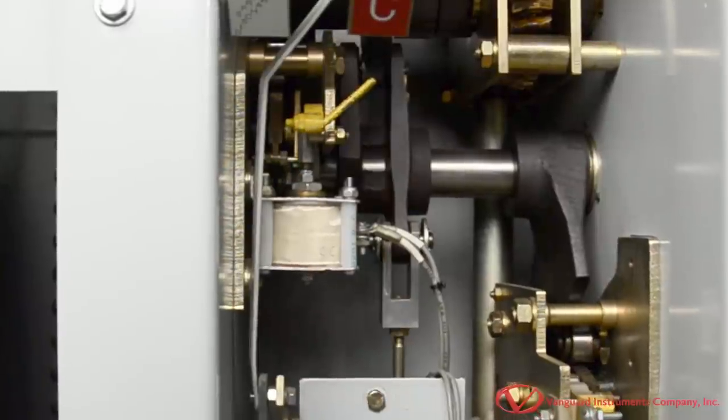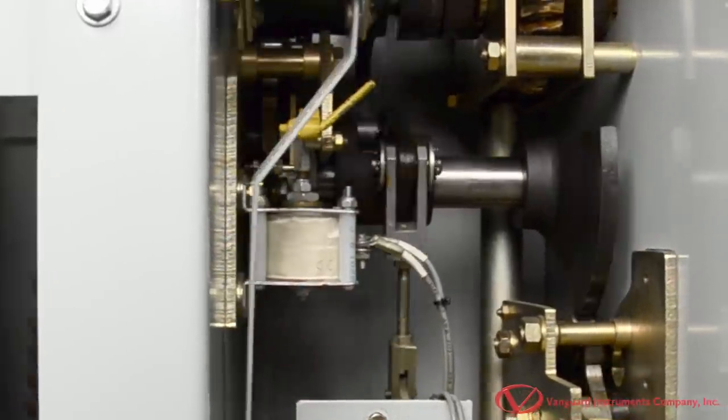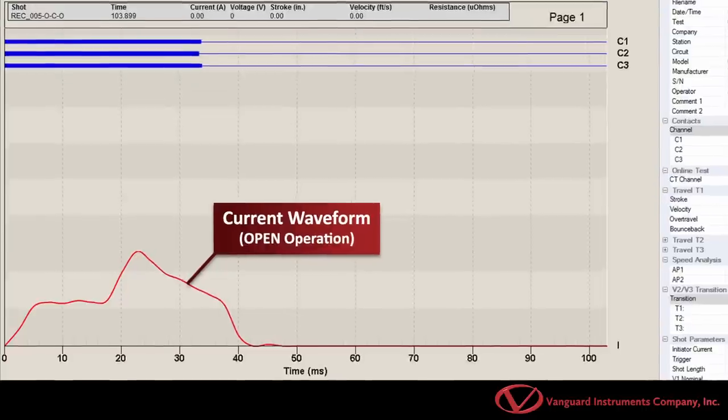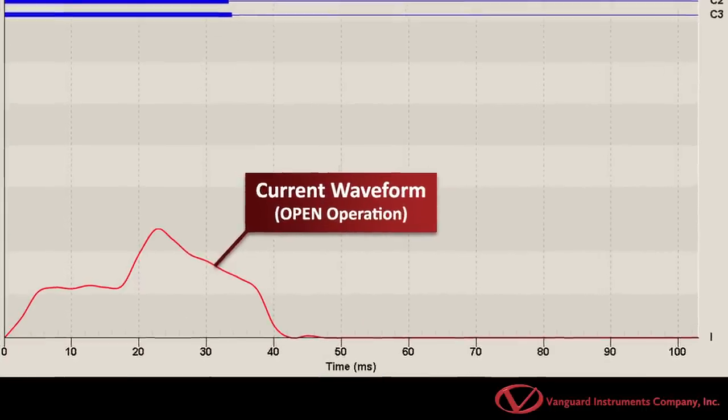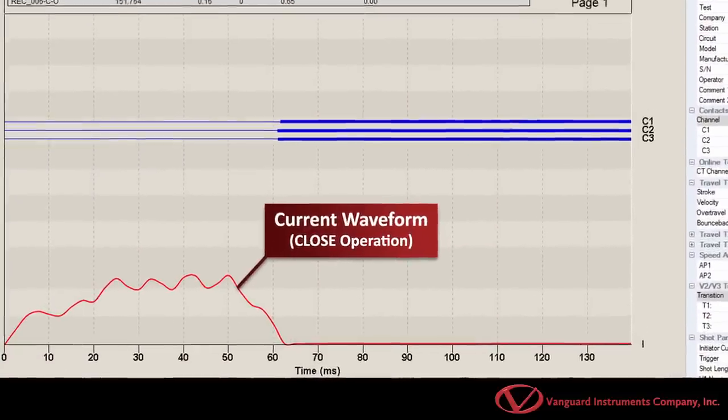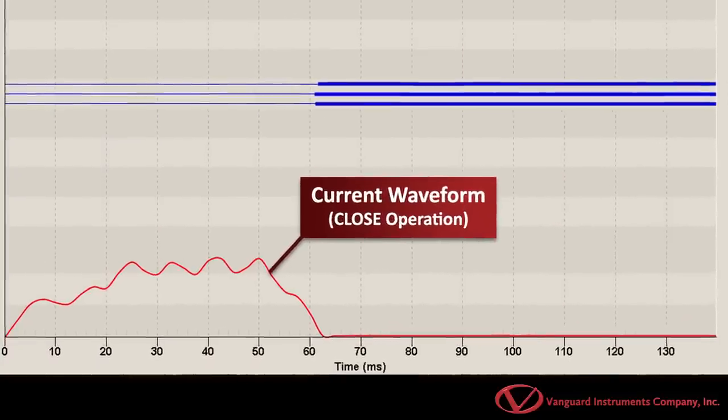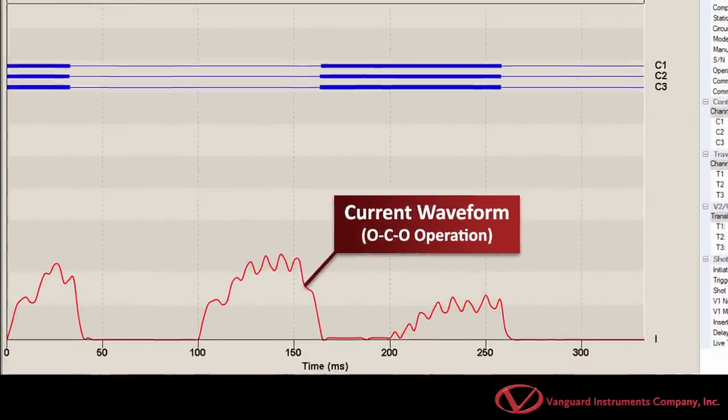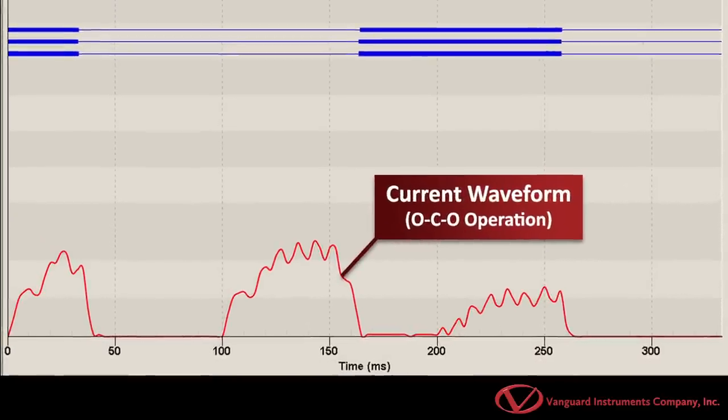A breaker's control circuit can also be tested by measuring the trip and close-coil current and the minimum pickup voltage. The measured values are then compared with the manufacturer's specifications to ensure optimal performance. The operating coil's current waveform provides insight into the mechanical and electrical condition of the operating coils. Any significant changes from the benchmark test signature should be further investigated.